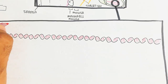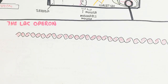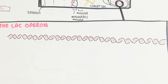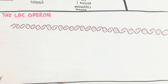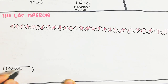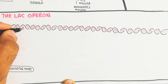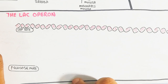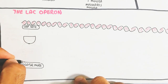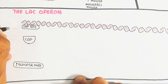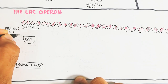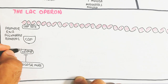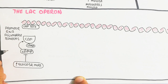The lac operon is located on the double-stranded circular bacterial DNA. It contains a CAP site. When glucose levels are high, cyclic AMP (cAMP) is not activated — cAMP levels decrease — so CAP cannot bind to the CAP site. This means the RNA polymerase binding region (promoter) is not activated.